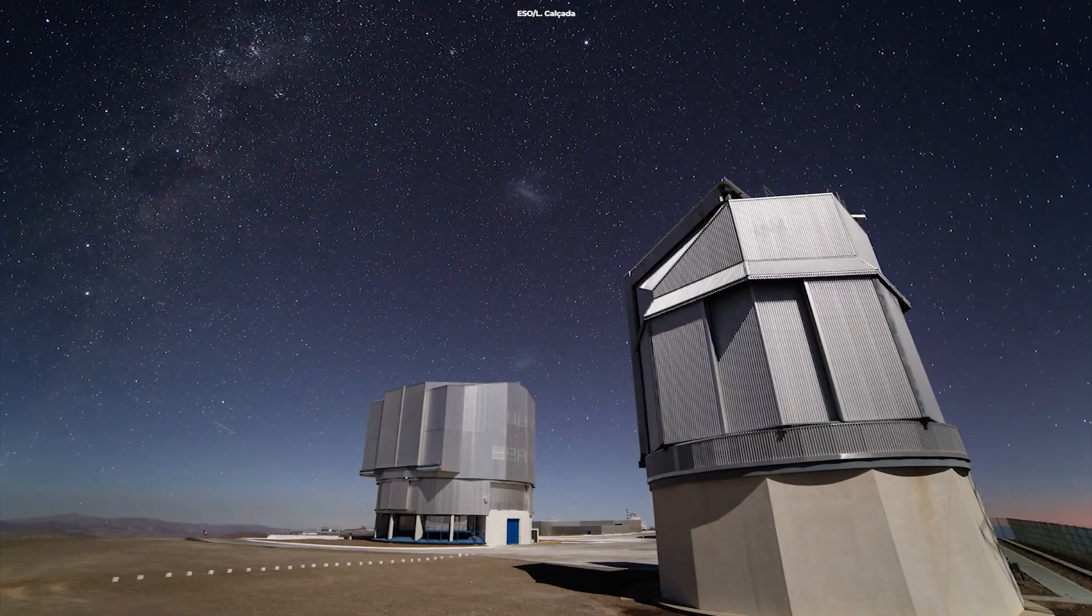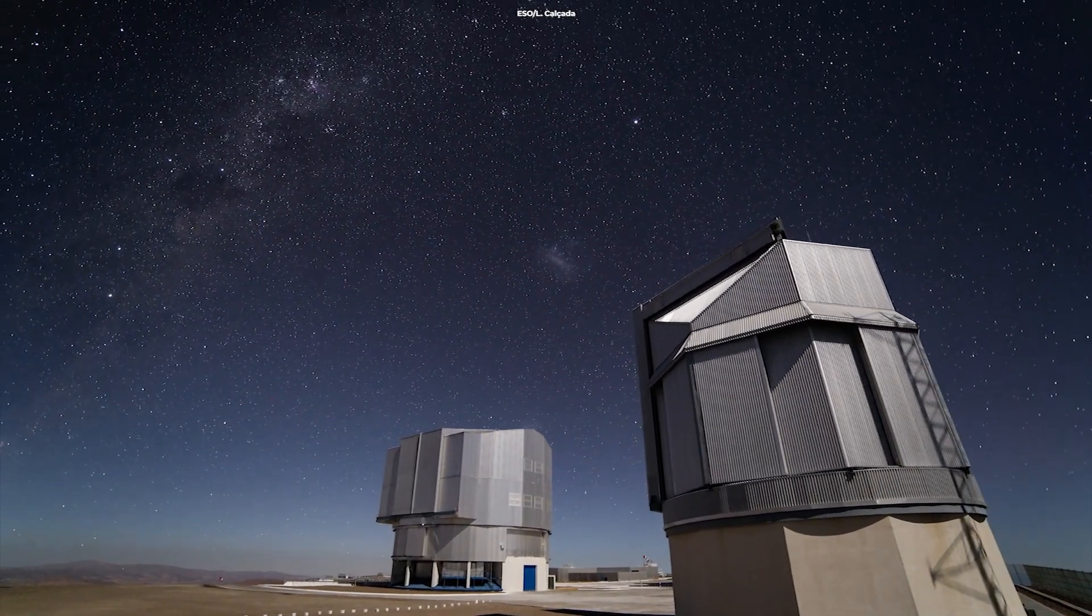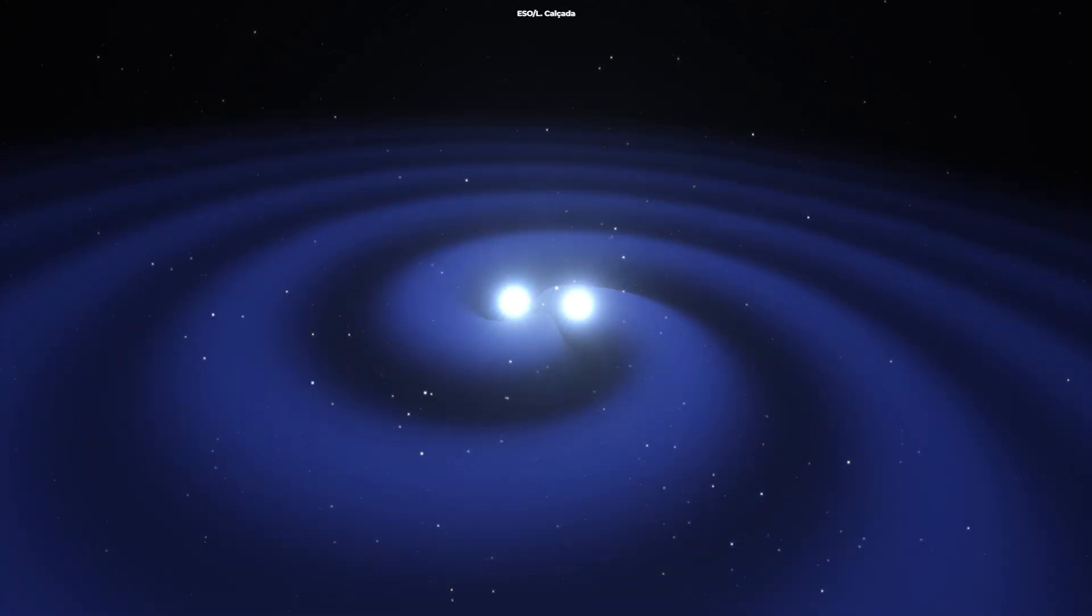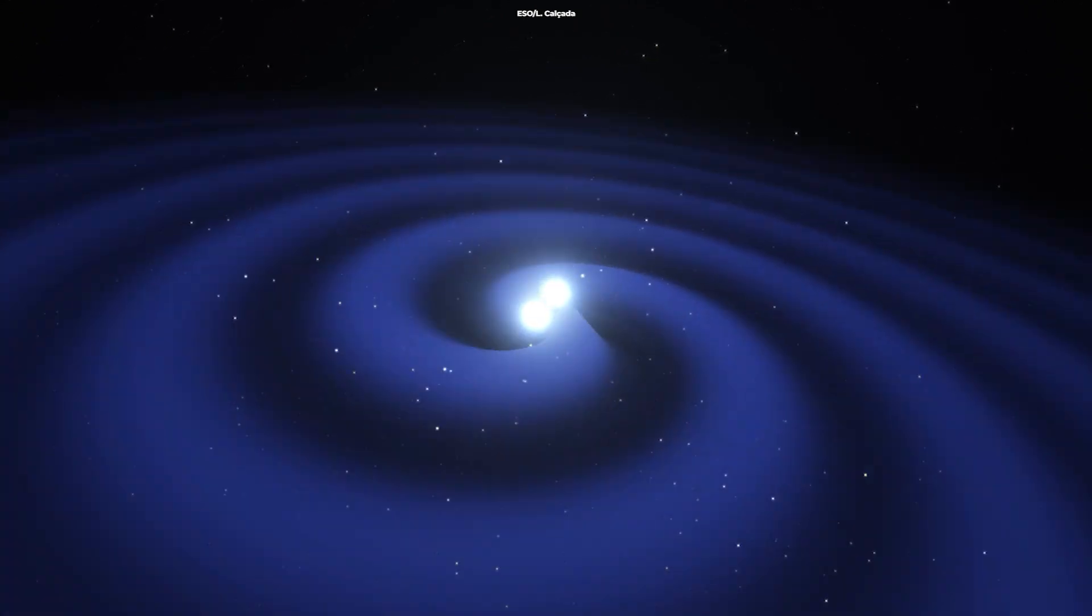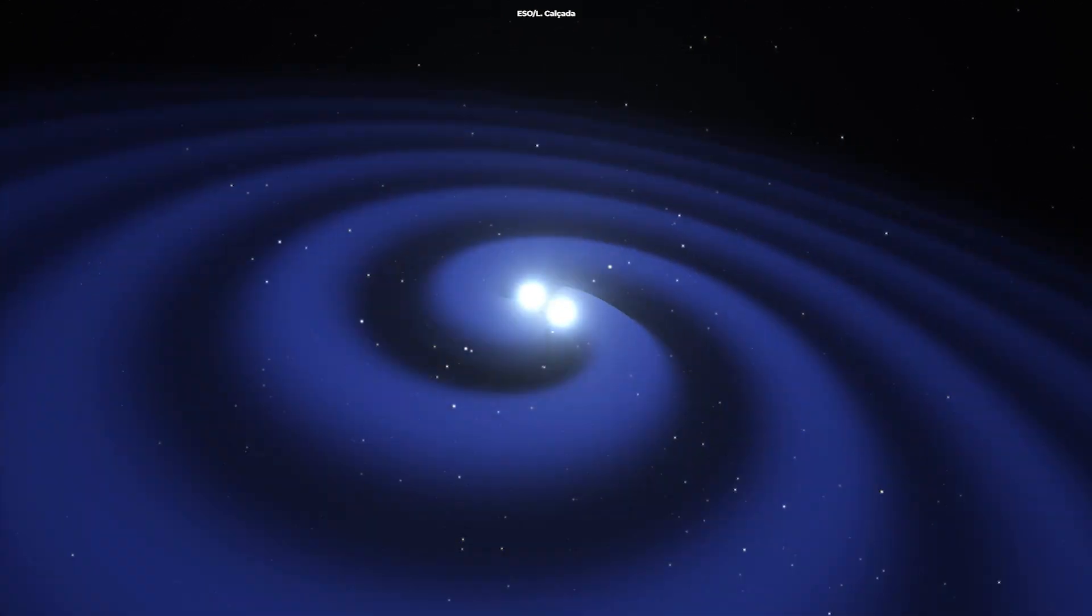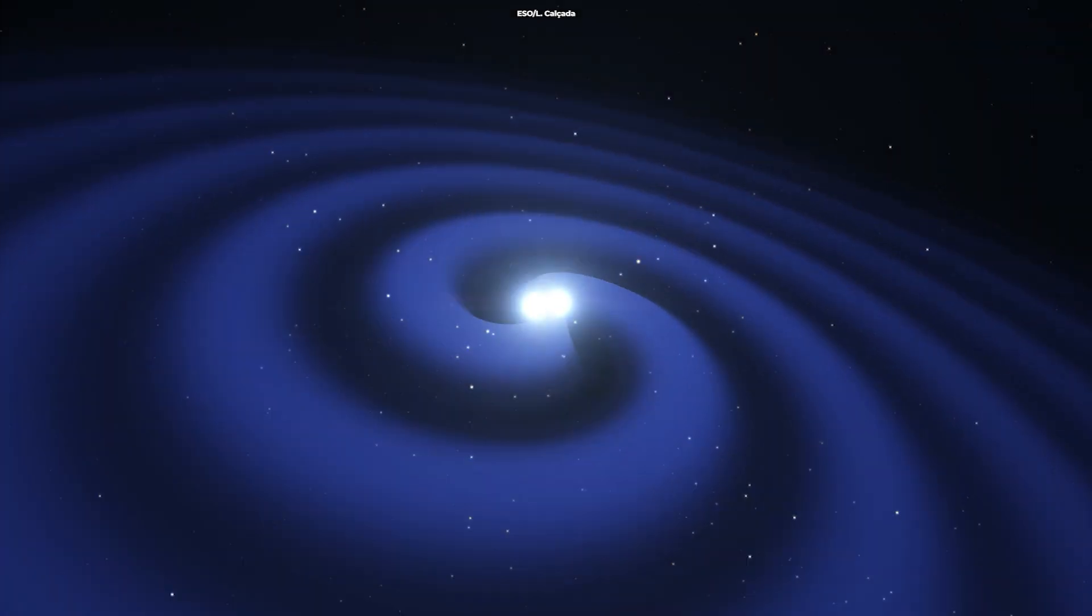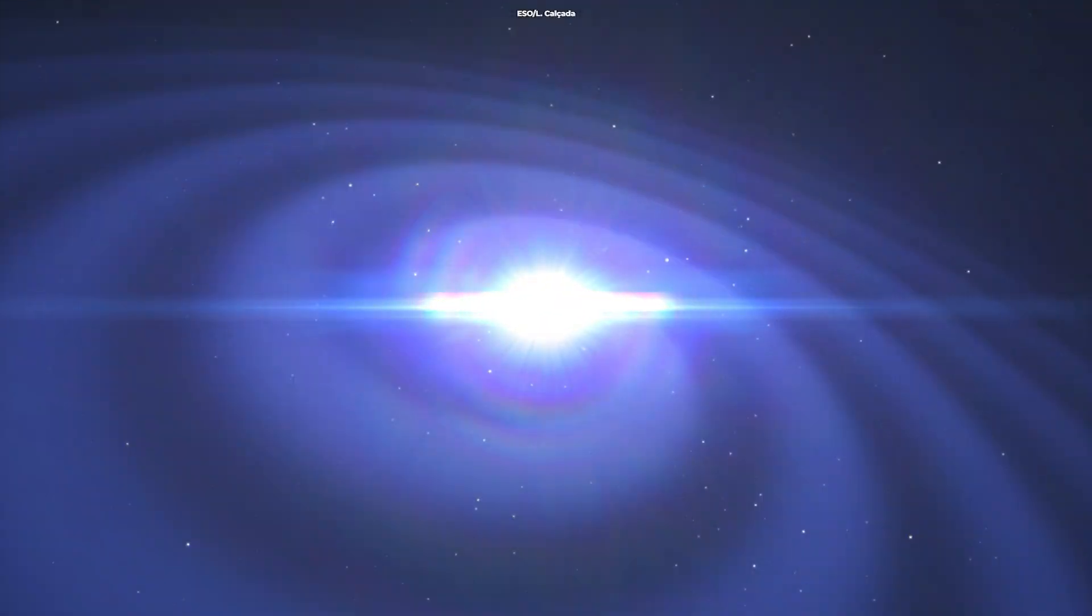When one celestial object orbits another, neutron stars are sometimes created as a pair in binary star systems. Binary pairs were previously only seen as two neutron stars or two black holes.